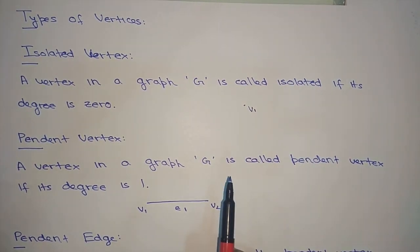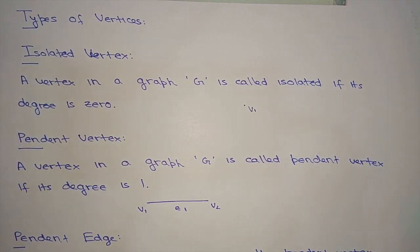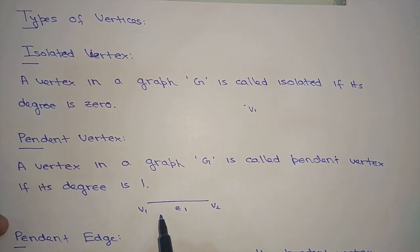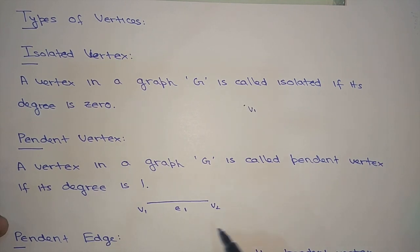V1 is an example of an isolated vertex. Now, what is a pendant vertex? A vertex in a graph G is called a pendant vertex if its degree is 1. A vertex is said to be pendant if there is only one edge connected to it. In V1 and V2, only one edge, E1, exists between them, and V1 has only E1 incident to it.